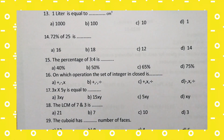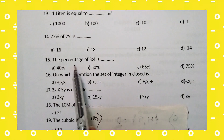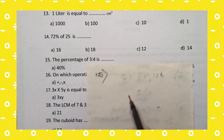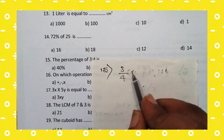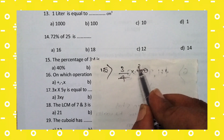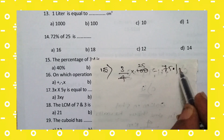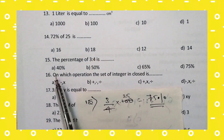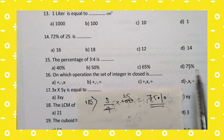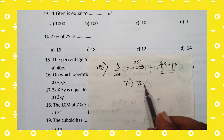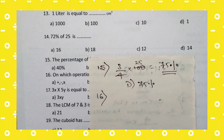15th question: the percentage of 3 to 4. To convert the ratio 3:4 to a percentage: 3 divided by 4 multiplied by 100. 100 divided by 4 equals 25, then 3 times 25 equals 75. So the answer is 75%. For the 15th question, option D — 75% — is the right answer.